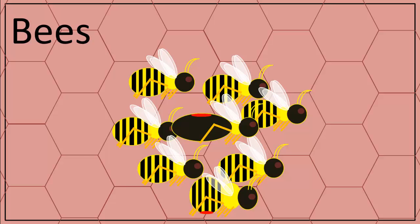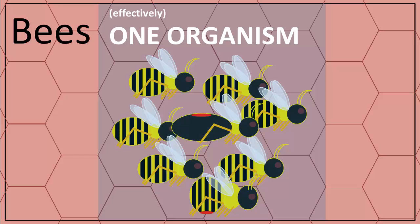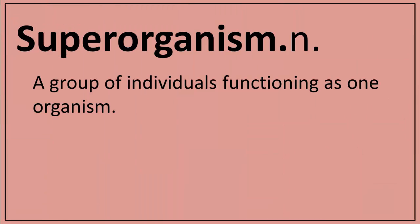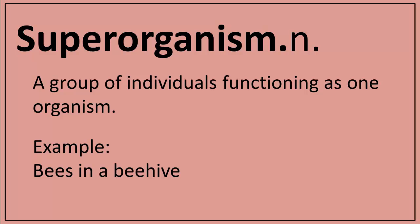With every bee in the hive being somehow an extension of the queen, the hive can effectively be considered a single organism. Interestingly, it's a hermaphroditic organism, because it has both male and female reproductive organs. This phenomenon is known as a superorganism — a group of individuals, in this case bees, that behave as though they were one organism.